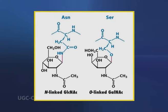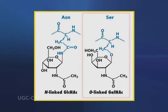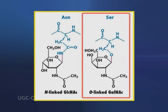In glycoproteins, sugars are attached either to the amide nitrogen atom in the side chain of asparagine, termed as N-linkage, or to the oxygen atom in the side chain of serine or threonine, termed as O-linkage.